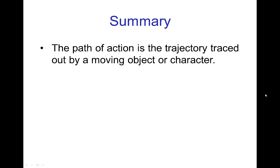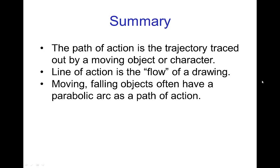In summary, the path of action is the trajectory traced out by a moving object or character. The line of action is something different—the visual flow of a single drawing. Path of action is the visual flow through a sequence of drawings. When objects are moving as they fall, they often have a parabolic arc as a path of action.